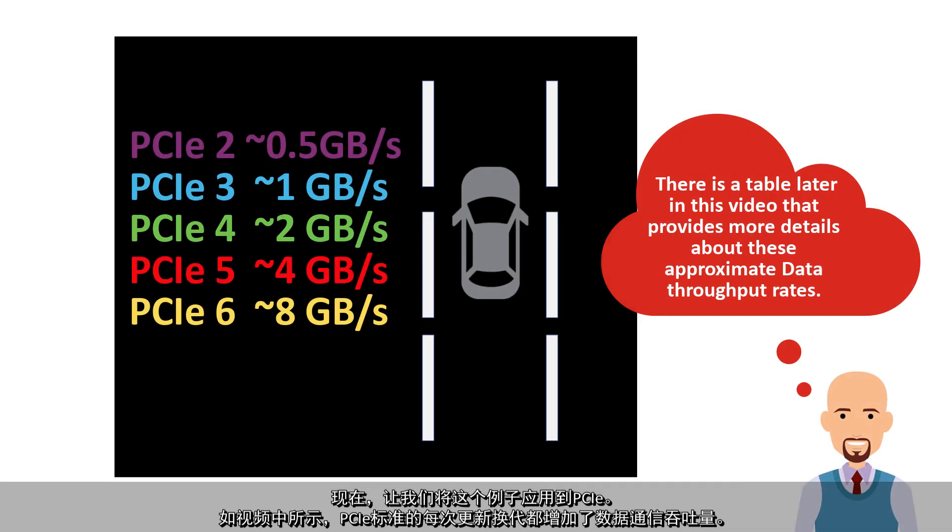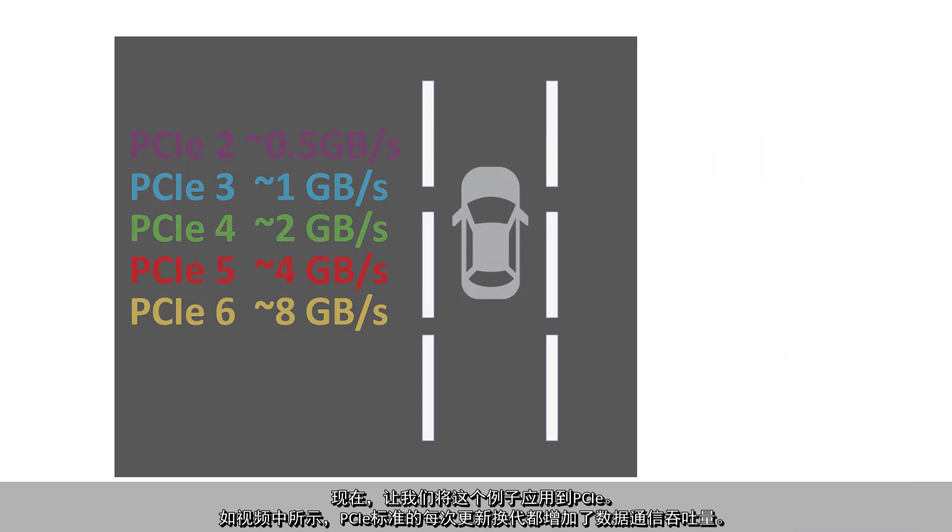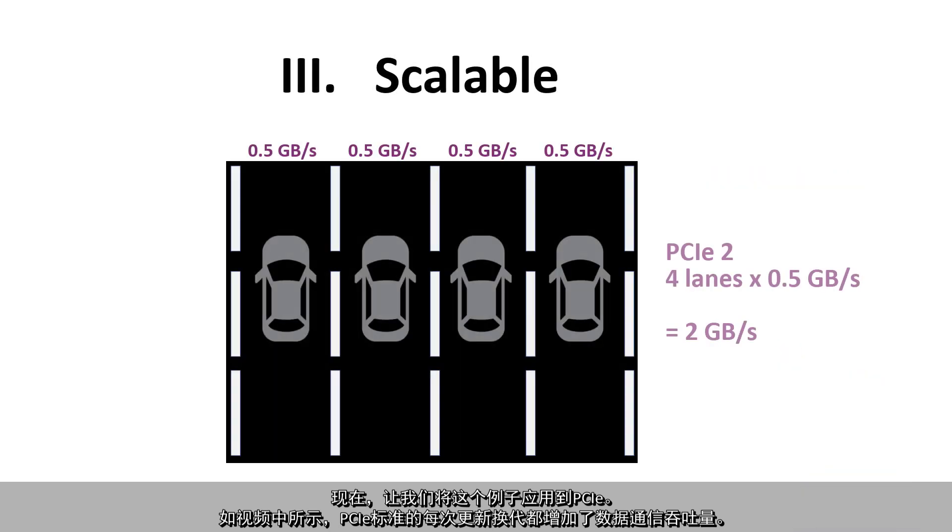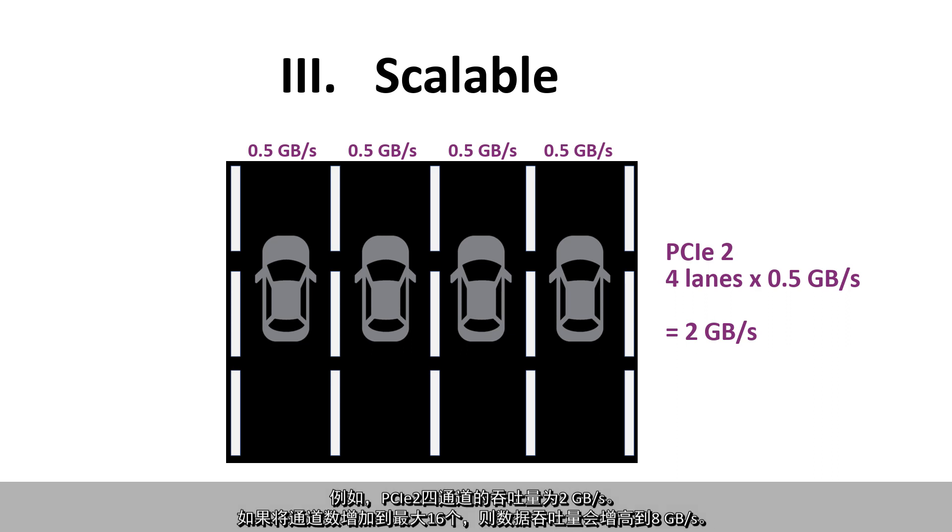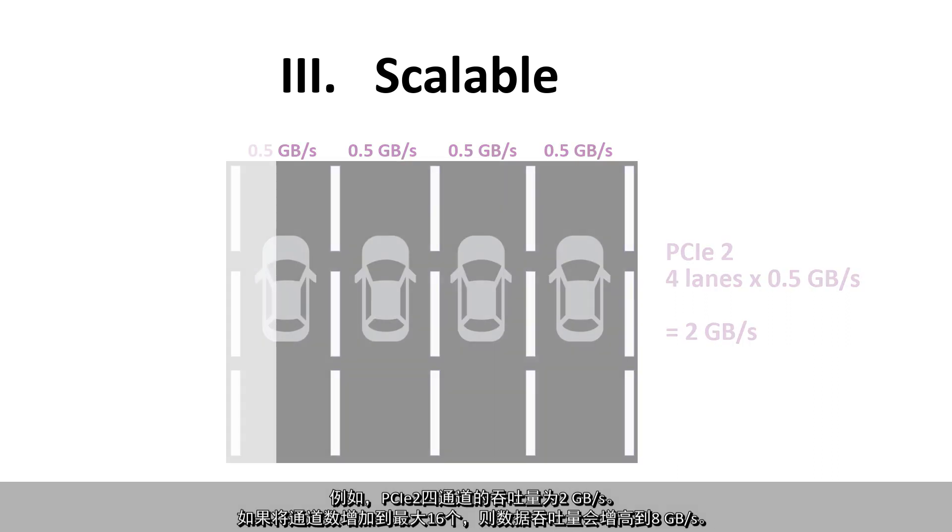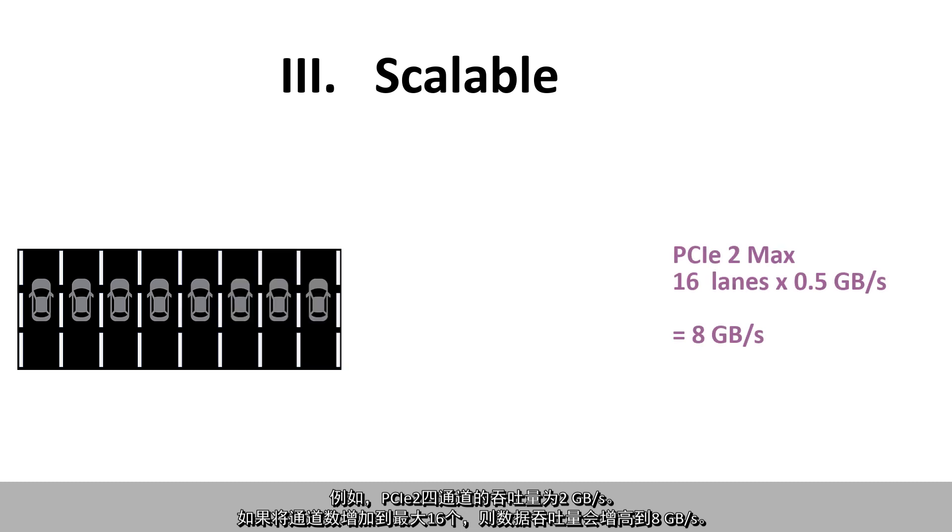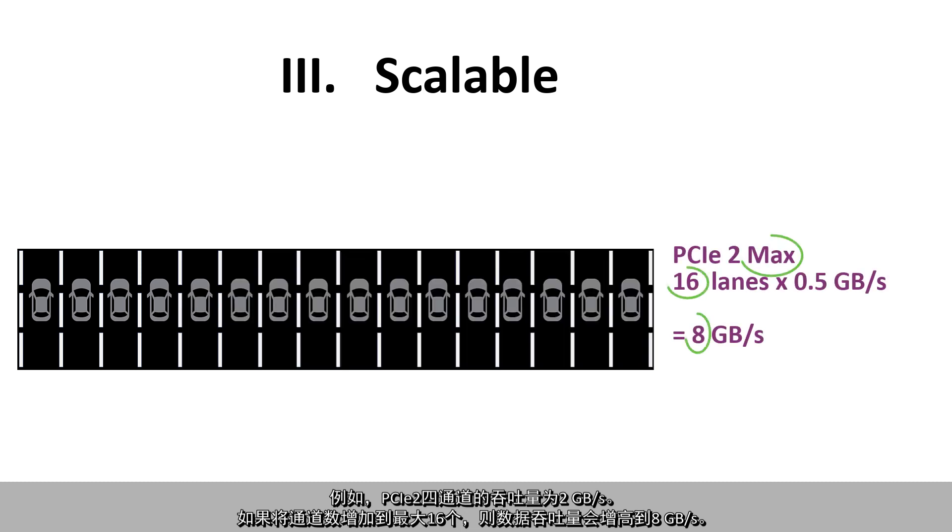Now let's bring this back to PCIe. Each successive generation of the PCIe standard has increased the data traffic throughput, as shown here. Four lanes of PCIe 2, for example, has a throughput of 2 gigabytes per second. If we were to expand that to the maximum 16 lanes, the data traffic throughput capability increases to 8 gigabytes per second.